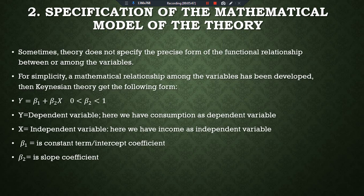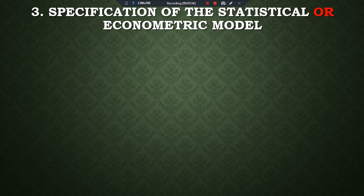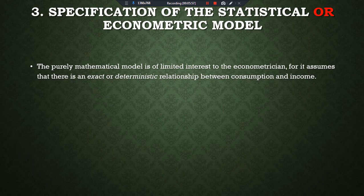After the mathematical model, we specify the statistical or econometric model. A purely mathematical model is of limited interest to the econometrician because it assumes an exact or deterministic relationship between consumption and income. In the real world and in behavioral sciences, the independent variable does not always fully determine the change in the dependent variable — behavioral and management sciences rely on inexact relationships.